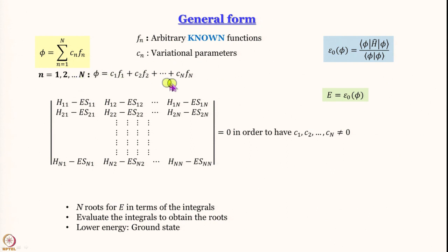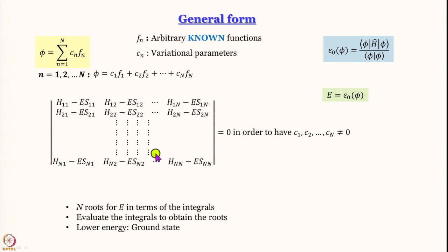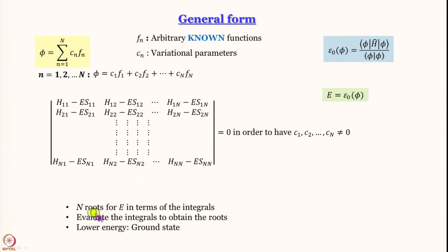In the general case the trial function is phi equals c_1 f_1 plus c_2 f_2 plus ... plus c_N f_N. This gives a larger, perhaps more intimidating secular determinant of Nth order. If we expand it — tedious but doable — we get N roots for E, and the lowest energy should be the ground state energy.